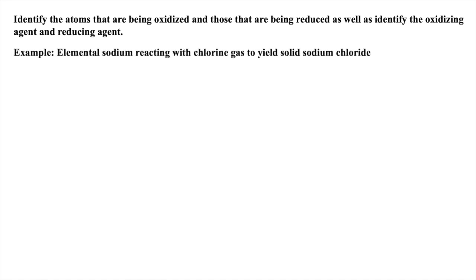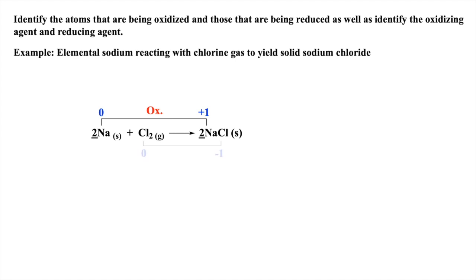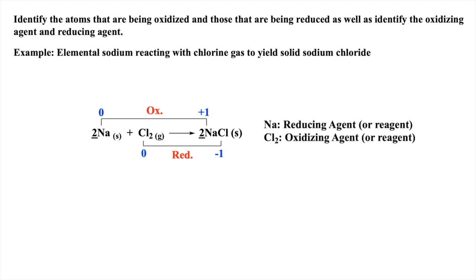Now let's use the skills of assigning oxidation states to atoms by identifying the atoms being oxidized and atoms being reduced, as well as identifying the oxidizing agent and reducing agent within a chemical reaction. Drawing from our nomenclature, the first step is to write the balanced equation, and don't forget to include states of matter. Then, examining how the oxidation states of sodium change, we deduce it as being oxidized. Similarly, we assign oxidation states to the chlorine atoms, and we deduce they are being reduced. Thus, sodium is the reducing agent, and chlorine is the oxidizing agent.